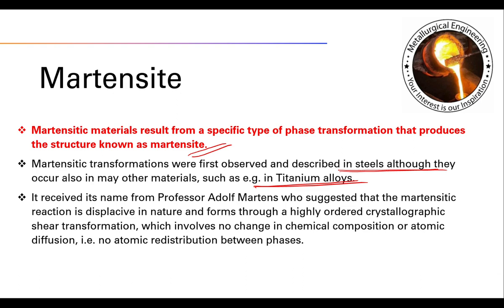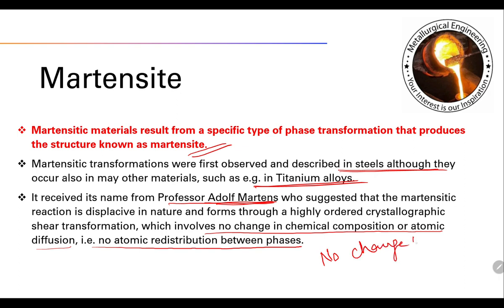The name comes from Professor Adolf Martens, who suggested that the martensitic reaction is displacive in nature and forms through a highly ordered crystallographic shear transformation. This process is diffusionless, which involves no change in chemical composition or atomic diffusion, and no atomic redistribution between phases.